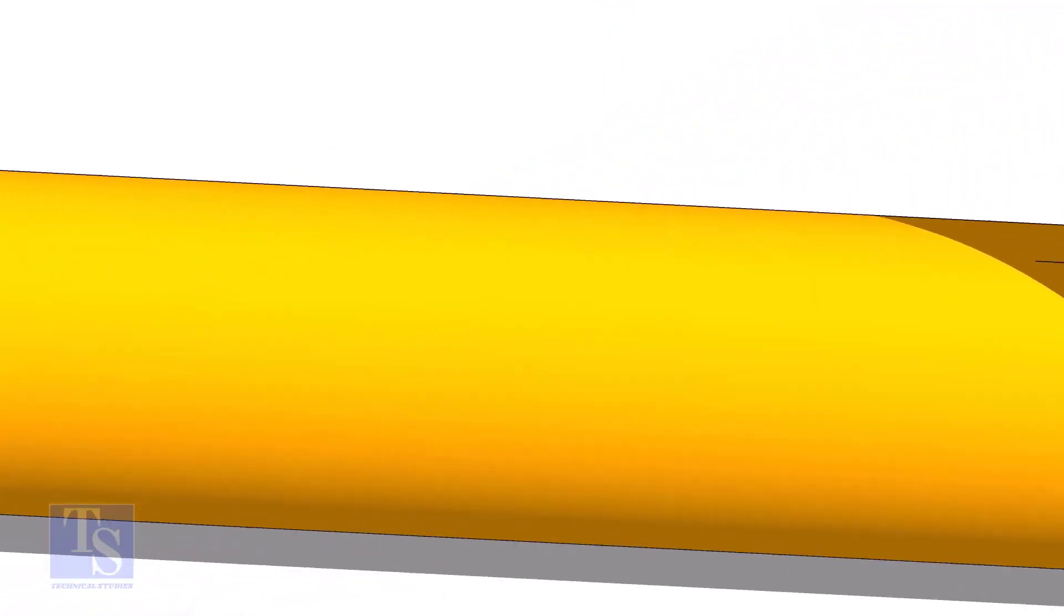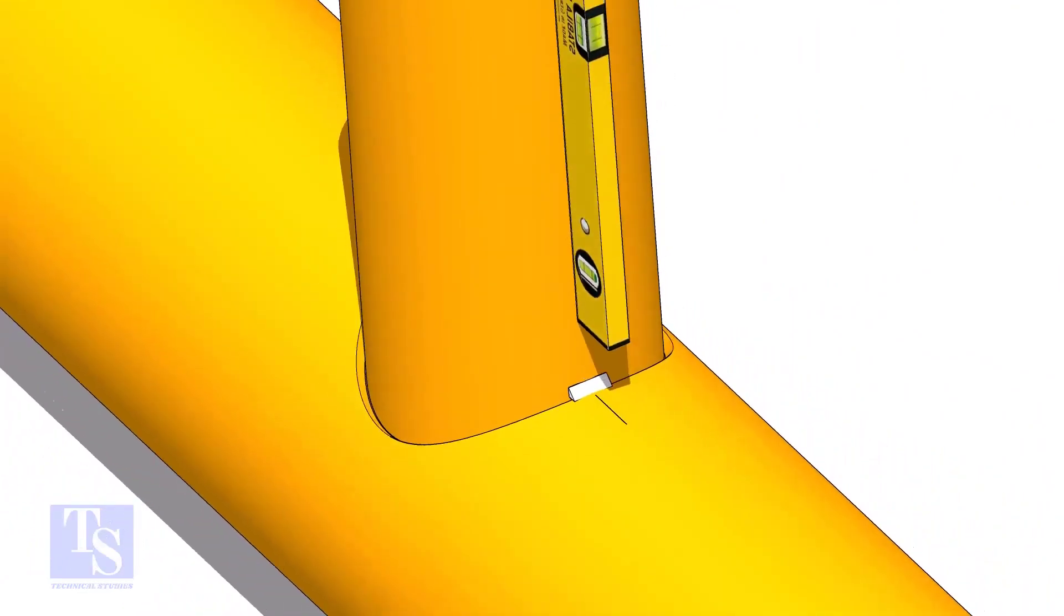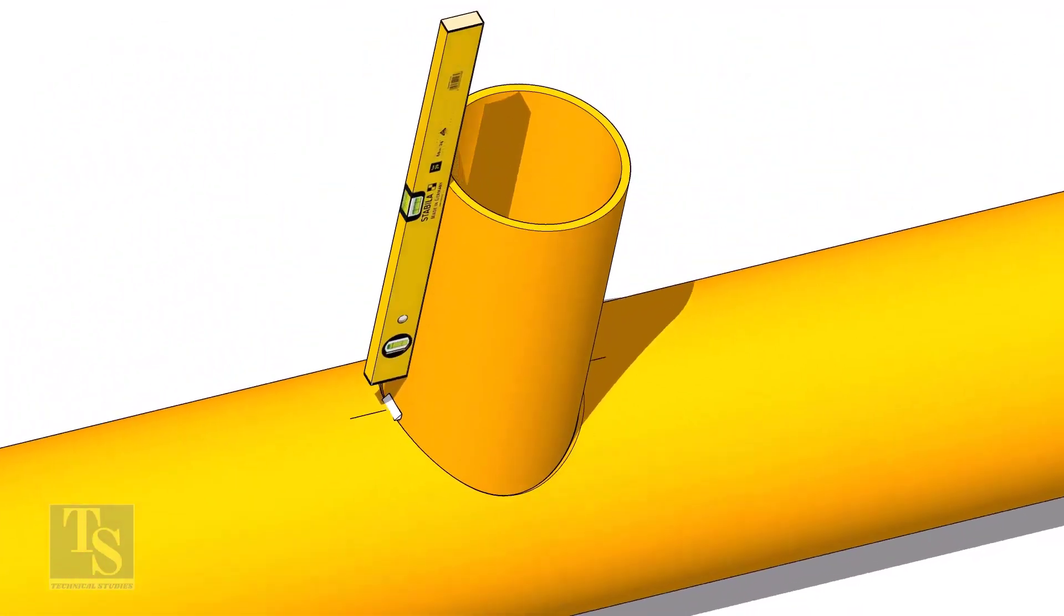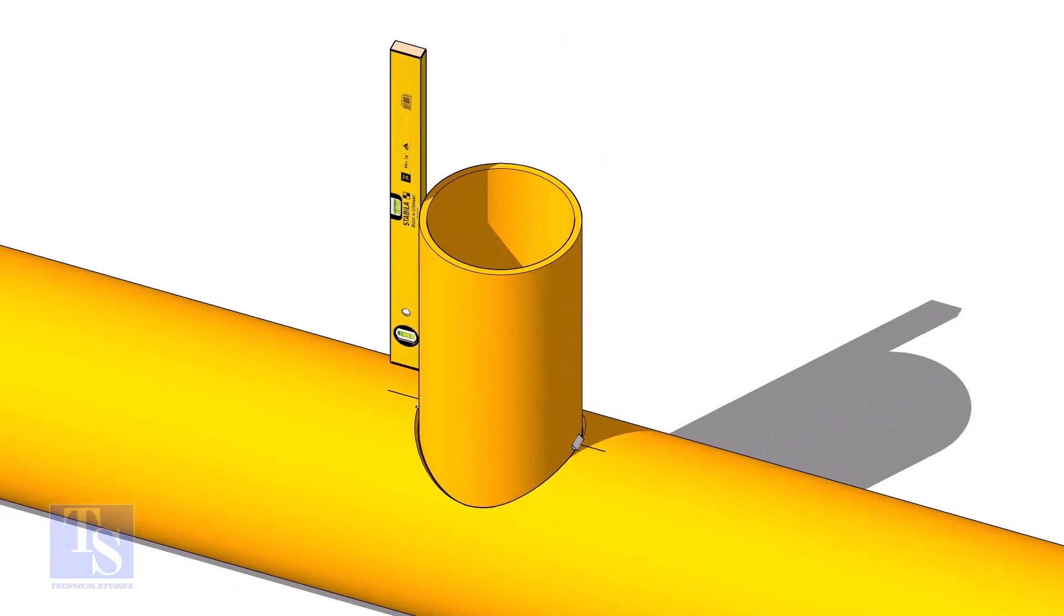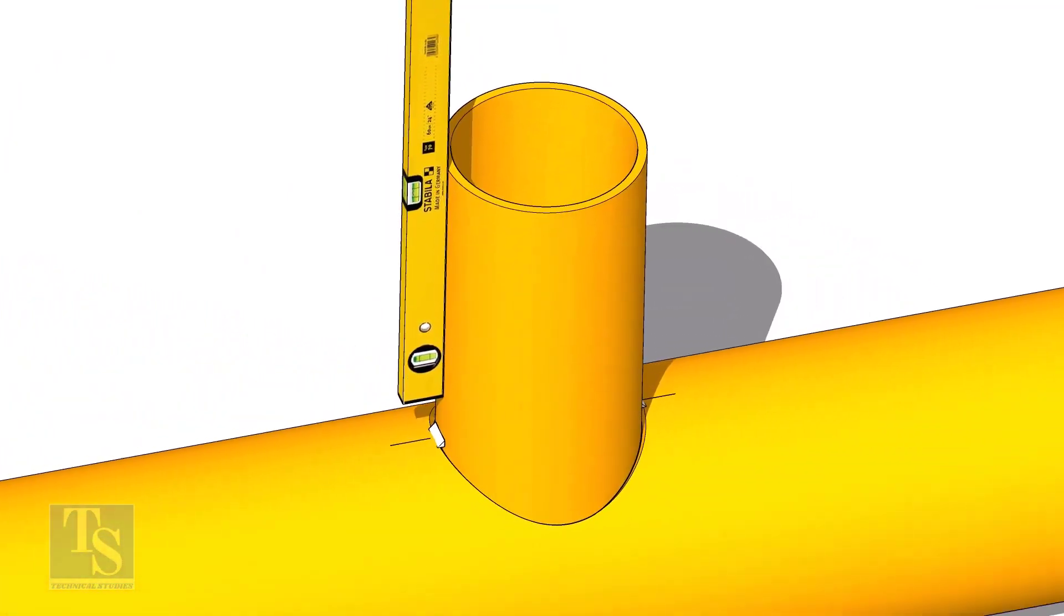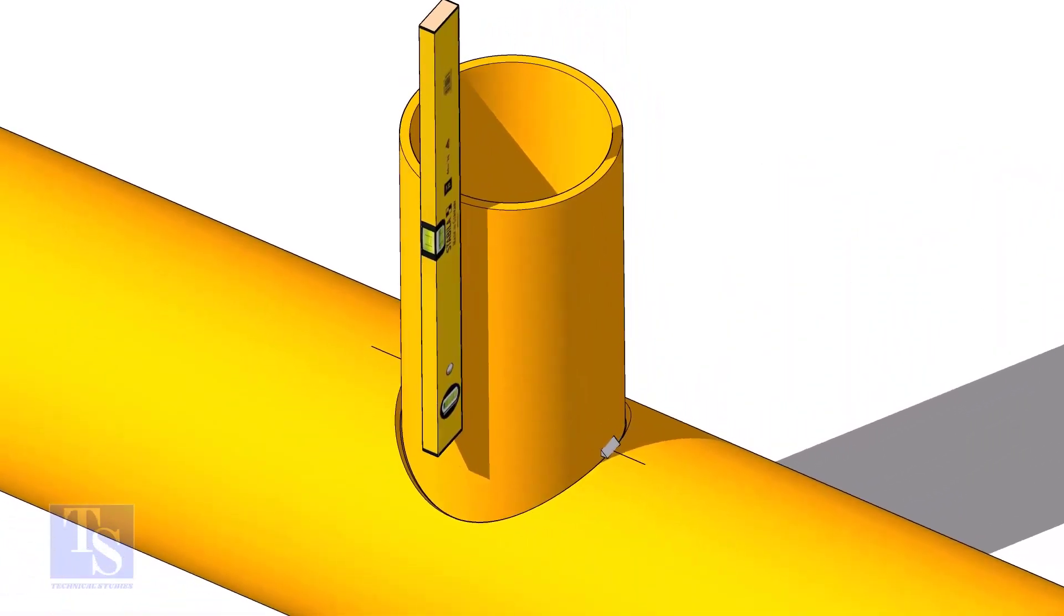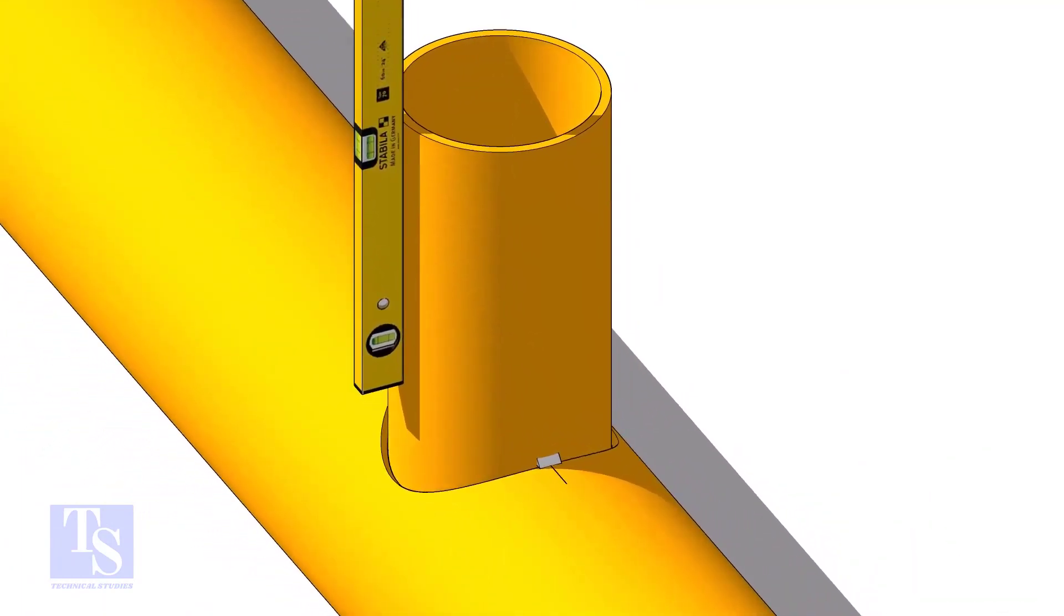Level the header. Put the branch in its position. Tack weld at one side and check the level of the branch. If the level is correct, tack weld on the other side. Make level of the other face of the branch and tack weld on both sides.